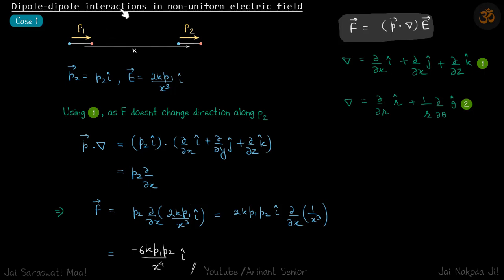Dipole-dipole interactions in non-uniform electric field. We are going to discuss three cases: one is when one of the dipoles is axially located to another dipole, second when one of them is perpendicular to the other one, and third when both are parallel to each other.